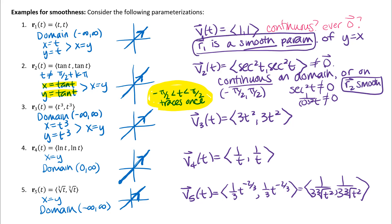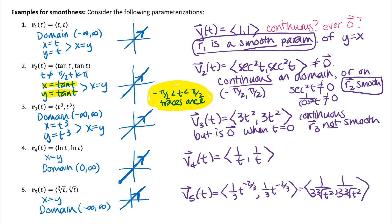For r3, the velocity vector is continuous for all values of t, but it equals the zero vector when t = 0, and t = 0 is part of the domain. So r3 is not a smooth parameterization — specifically, it is not smooth at t = 0. Notice the graph is the same as r1 and r2; I can't just look at the picture to determine if the parameterization is smooth.